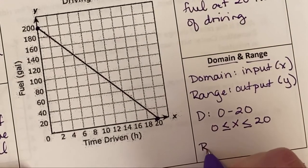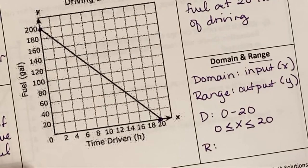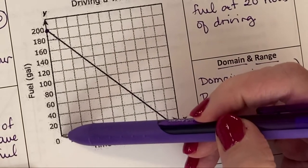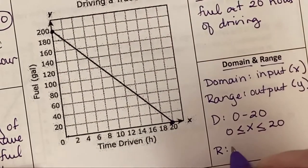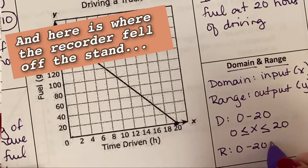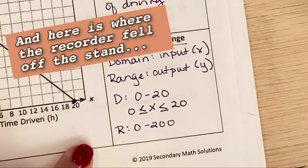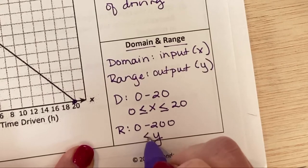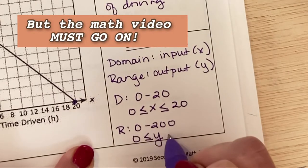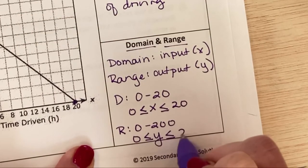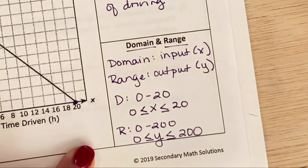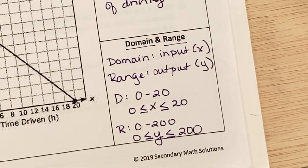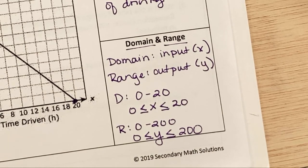I bet you guys can figure out what the range would be. I'm going to do the same thing, only with my y-values. So I'm going to get all the way from 0 to 200. The fancy mathematical way of writing it is going to be y-values greater than or equal to 0 and less than or equal to 200. So domain is your x's, range is your y's. We're going to go ahead and try the next two examples on your own.